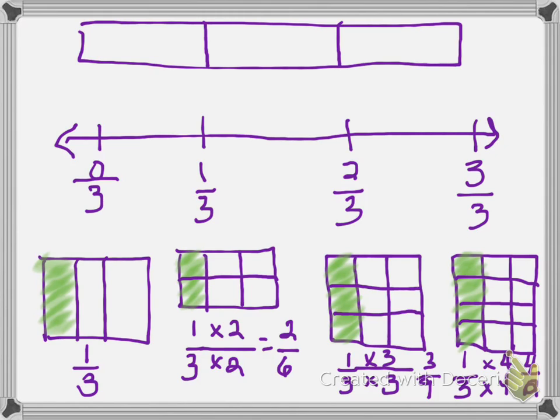Man, yep, I could go through and I could make equivalent fractions to one-third, which is one-third is equal to two-sixths, which is also equal to three-ninths, which is also equal to four-twelfths. Dang!